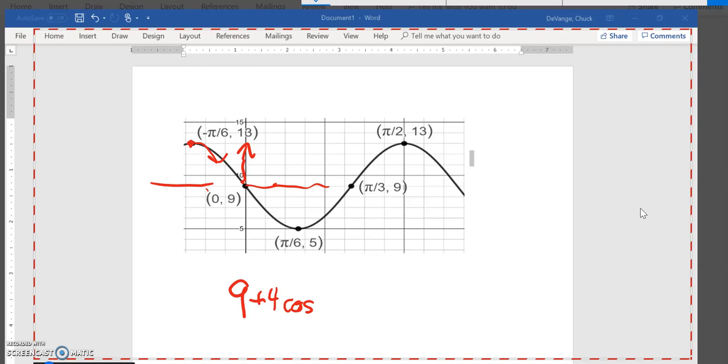And then, like I said, it's going to be cosine because I'm starting at a top. So there's those parts. And now let me do that offset. This is shifted back pi over 6. So I'm going to say plus pi over 6.